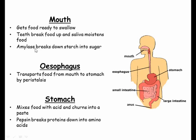The oesophagus transports food from the mouth to the stomach. As with the rest of the alimentary canal, the food is moved by peristalsis, which is where waves of muscle contraction push the food along the tube, which you can see in your neck when you swallow.